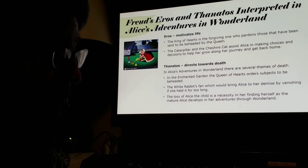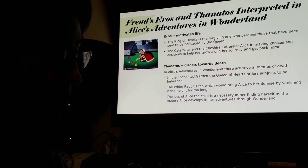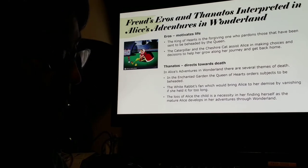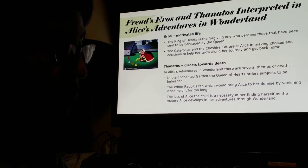Also as her superego, the Queen is placed under it as she takes pleasure in having people beheaded. Freud's Eros and Thanatos are also interpreted in Alice's Adventures in Wonderland. Eros motivates life — the King of Hearts is the forgiving one who pardons those sent to be beheaded by the Queen. The caterpillar and the Cheshire Cat assist Alice in making choices and decisions to help her grow along her journey and get back home.